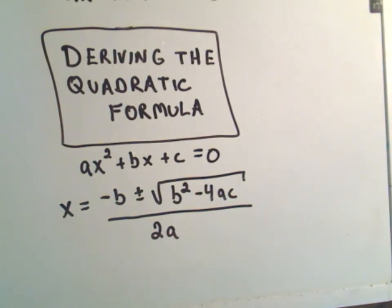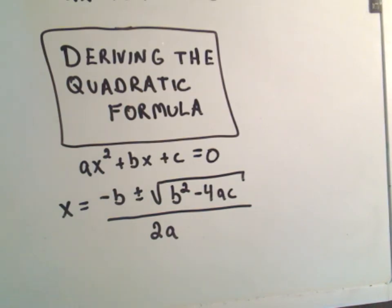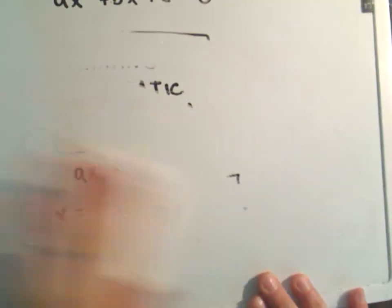In this video I want to talk about deriving the quadratic formula. When you have a quadratic equation ax squared plus bx plus c equals zero, a lot of people know that they can find solutions to this equation using the formula negative b plus or minus the square root of b squared minus 4ac all over 2a. I've had a couple people ask me where this comes from, so let's talk about where it comes from here.